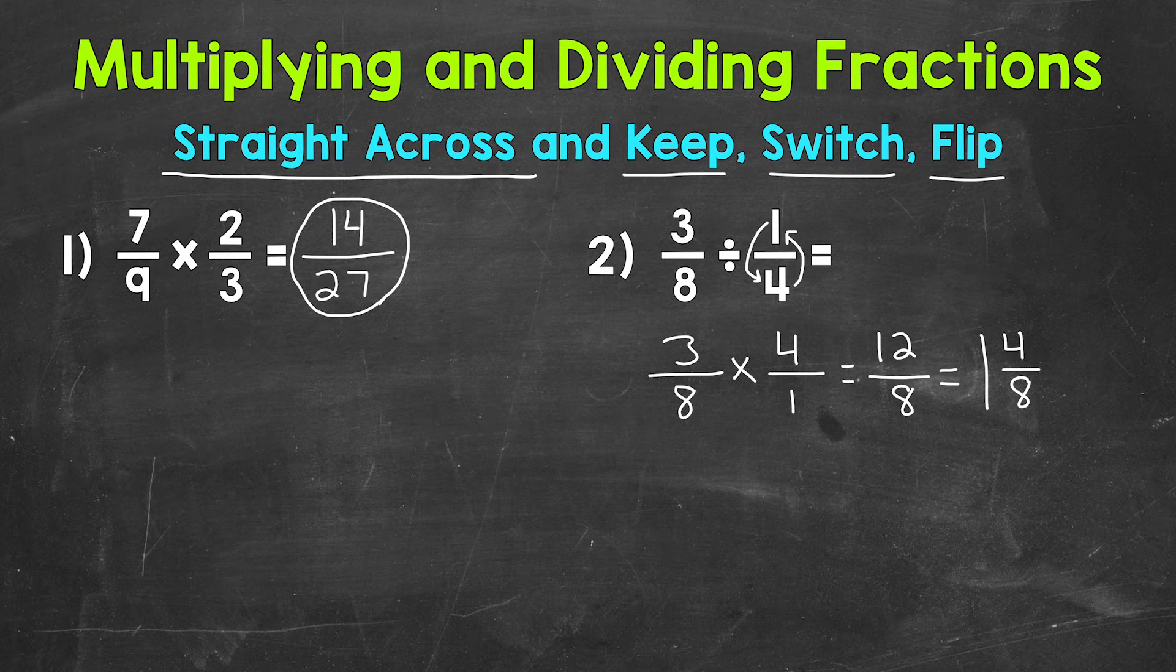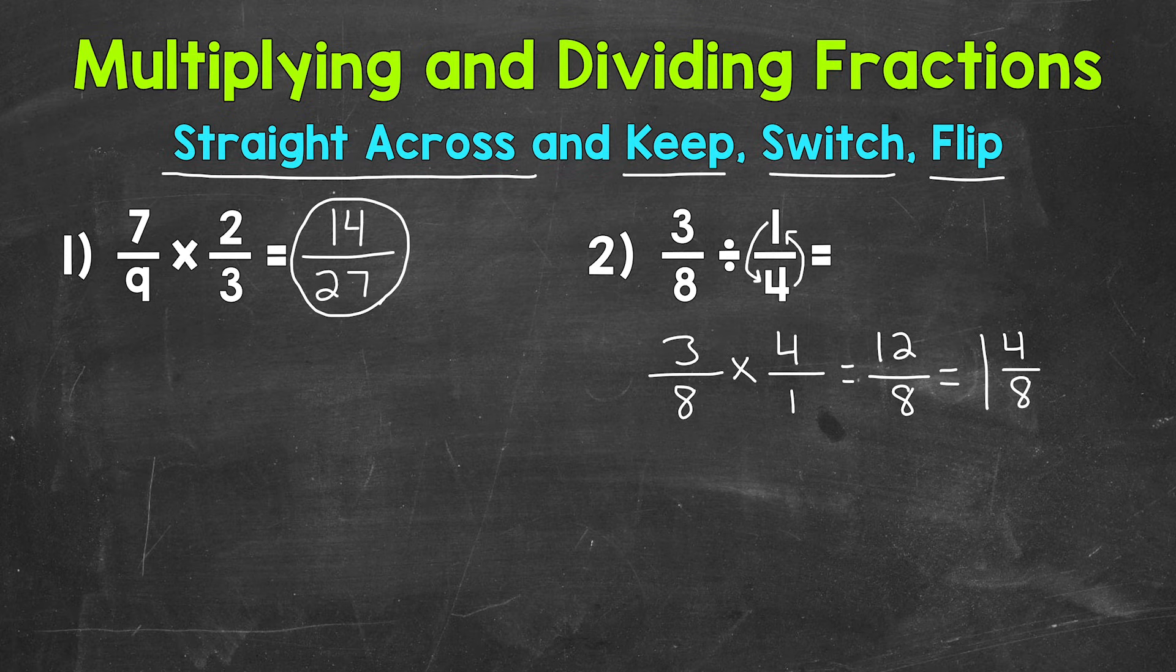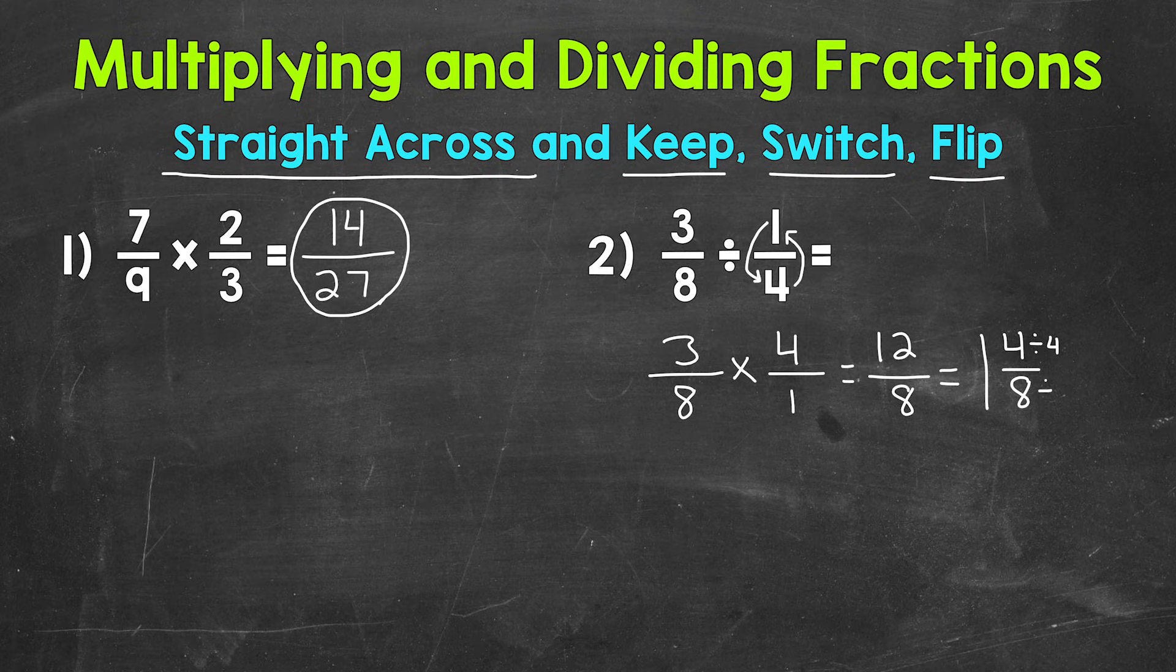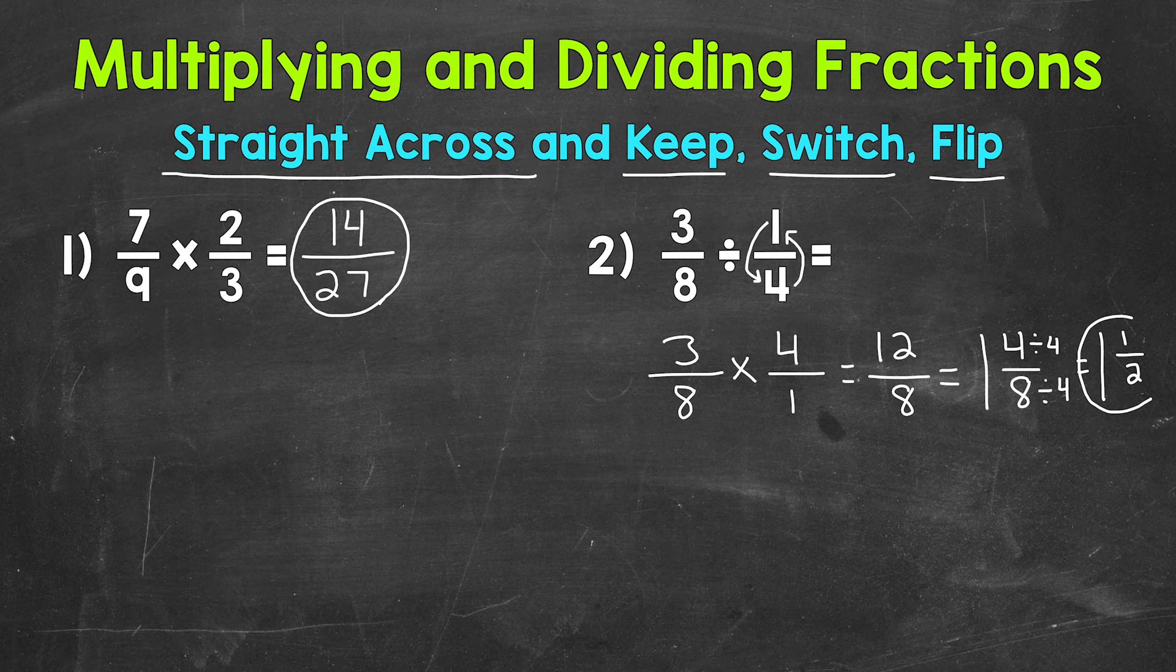Now that can be simplified. We have a common factor other than one between four and eight. So we can put this into simplest form. Our greatest common factor is four. Let's divide both of these by four. Four divided by four is one, and eight divided by four is two. So we get one and a half for our final answer.